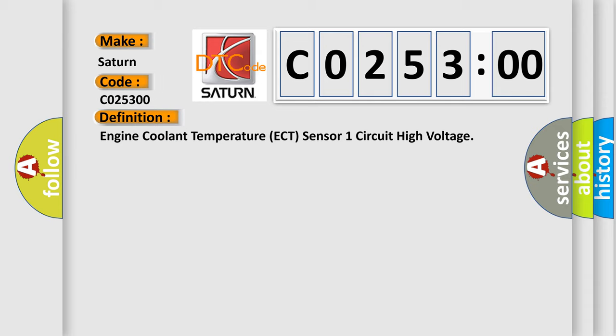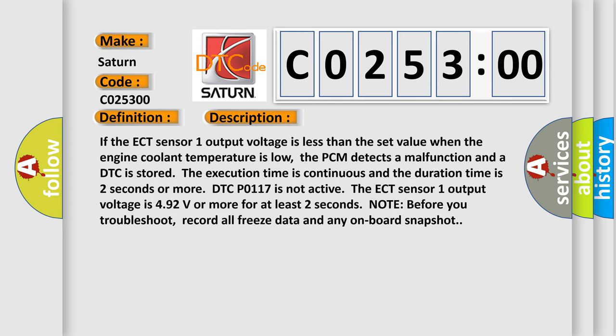And now this is a short description of this DTC code. If the ECT sensor 1 output voltage is less than the set value when the engine coolant temperature is low, the PCM detects a malfunction and a DTC is stored. The execution time is continuous and the duration time is 2 seconds or more. DTC P0117 is not active. The ECT sensor 1 output voltage is 4.92 volts or more for at least 2 seconds.